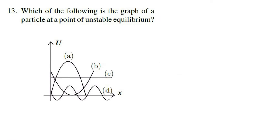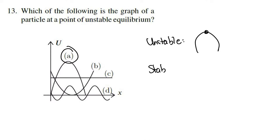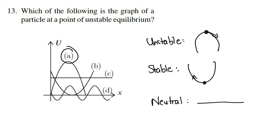Question 13: which of the following is the graph of a particle at unstable equilibrium? Unstable equilibrium is concave down, where there's no restoring force — in fact, the force pulls the mass away from equilibrium. Stable equilibrium has a restoring force pulling it back to equilibrium (concave up). Neutral equilibrium is just flat — there is no force acting. So the answer is the concave-down graph.